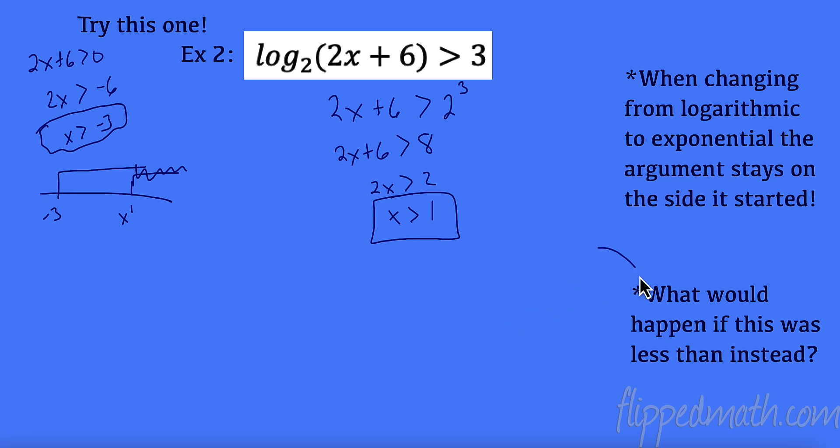Now let's check this out. What would happen if it was less than? So if I went back and I changed this and it was less than, what would happen? All right, hypothetical. All right, what would happen? Well, this is going to stay the same. My restriction still has to be greater than negative 3. But now when I solve this, I'm going to have x is less than 1. Let's see where they intersect.